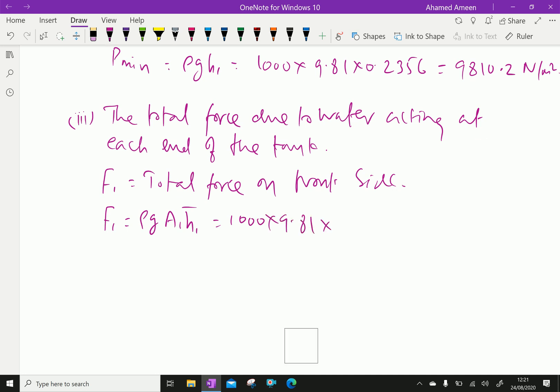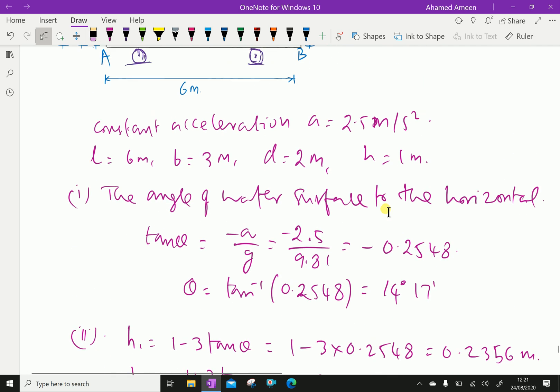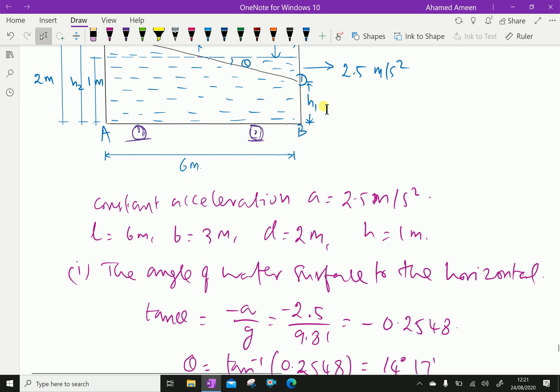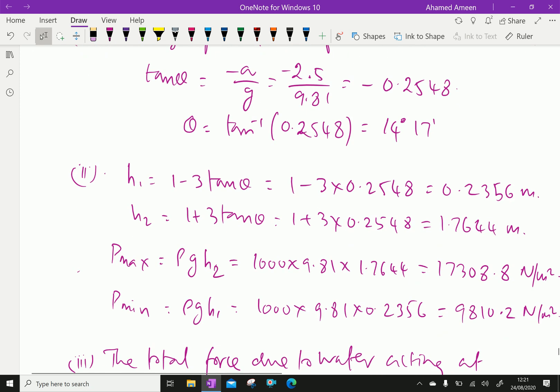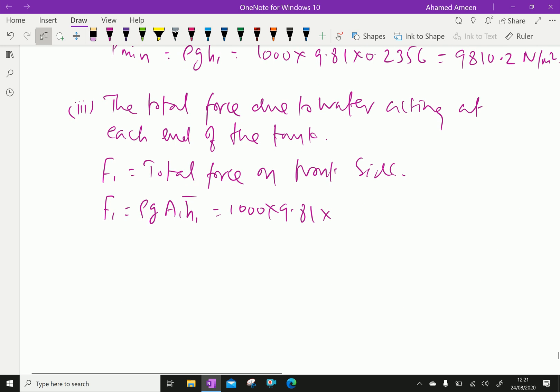A1 is the front area of the water surface: h1 times width, which is 0.2356 times 3 meters. h bar is 0.2356 divided by 2, because h bar is the center of gravity.